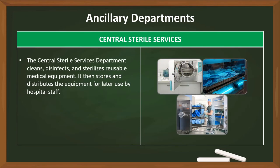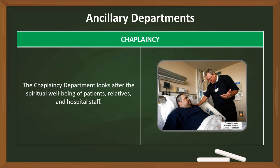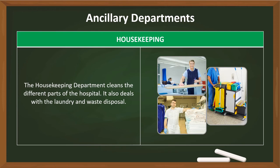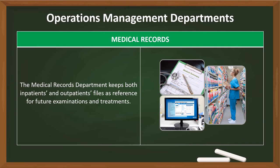The central sterile services department cleans, disinfects, and sterilizes reusable medical equipment. It then stores and distributes the equipment for later use by hospital staff. This department is also called sterile processing, or central supply. The chaplaincy department looks after the spiritual well-being of patients, relatives, and hospital staff. The housekeeping department cleans the different parts of the hospital. It also deals with the laundry and waste disposal. The medical records department keeps both inpatient and outpatient files as reference for future examinations and treatments.